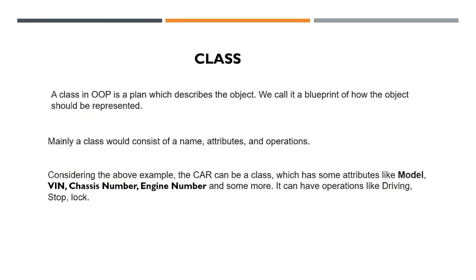A class is a plan which describes the object. Car is a class, mobile is a class, dog is a class — it's a blueprint of how the object should be represented. It consists of a name, attributes, and operations. The attribute of a car class can be model number, chassis number, engine number, VIN number, and any other features we can add. So the class name, its attributes, and what operations it performs — these are the three parts of a class definition.